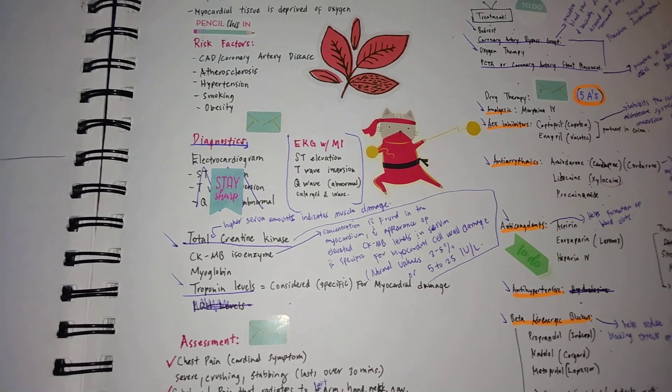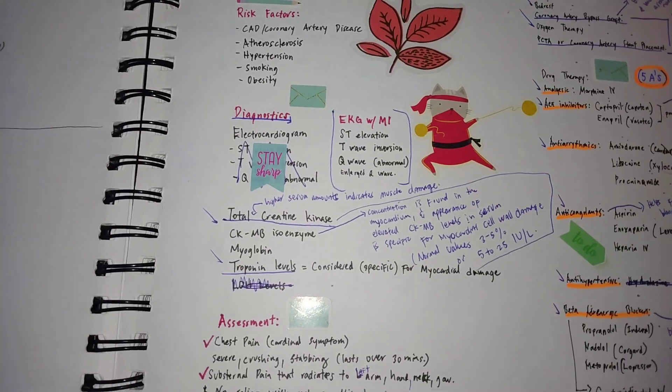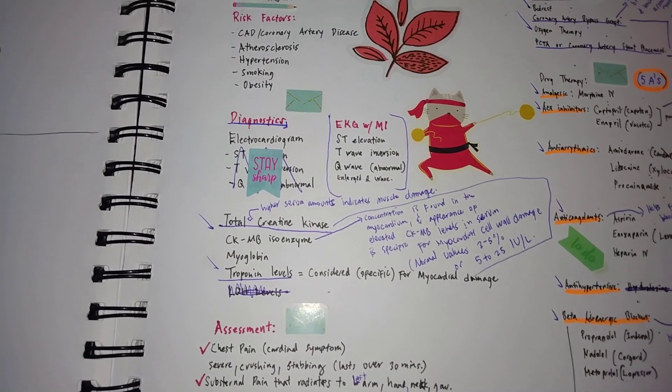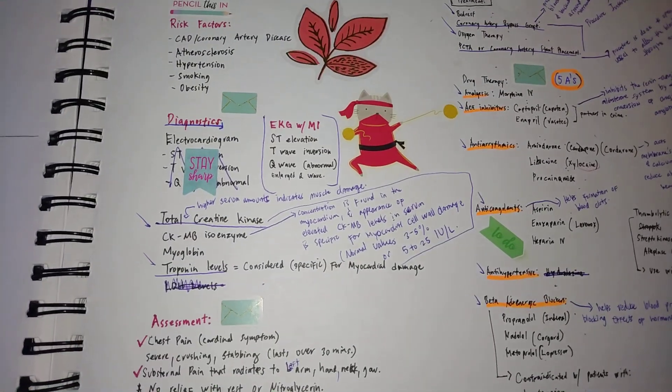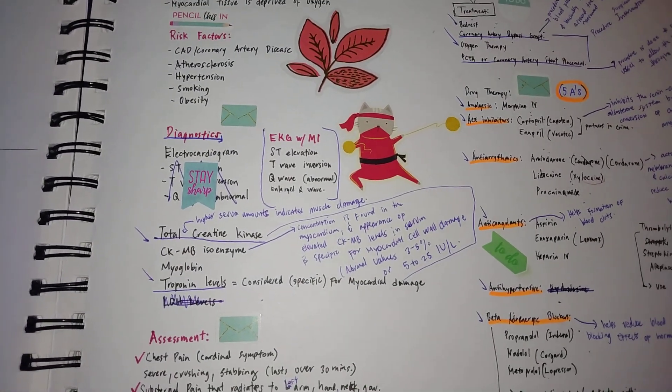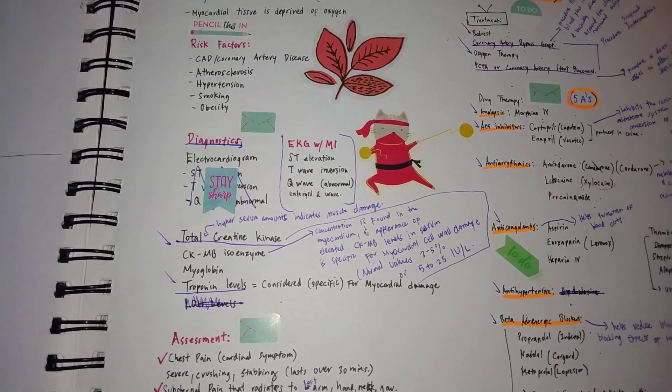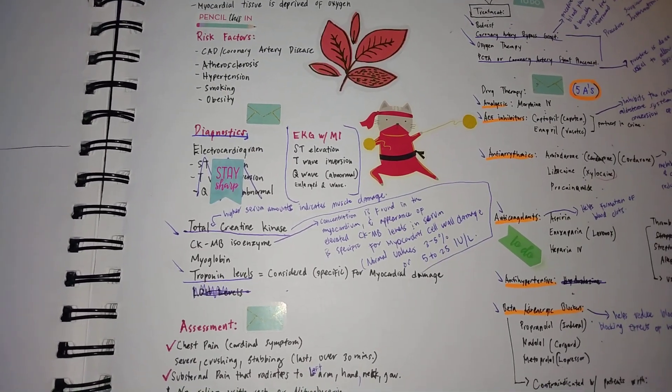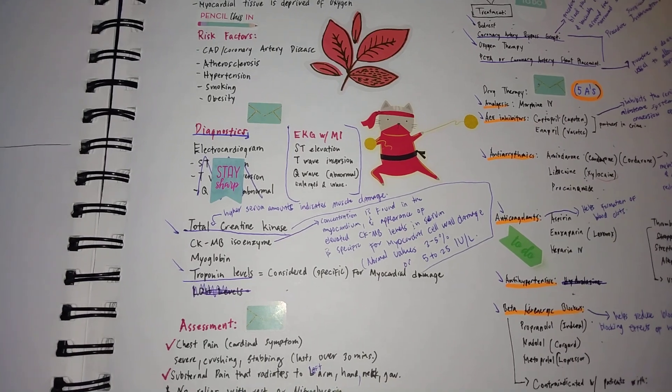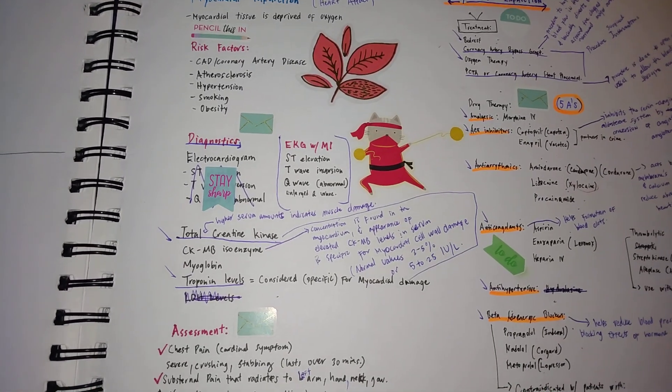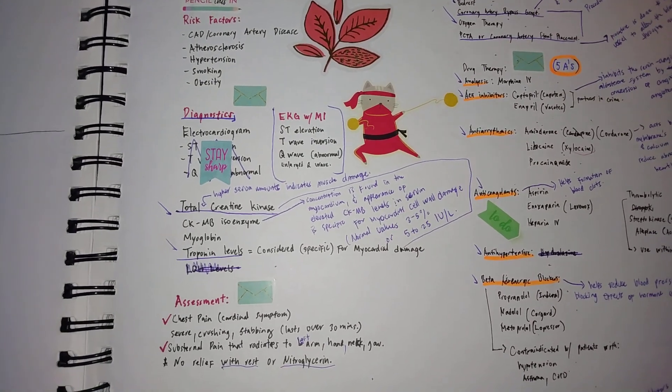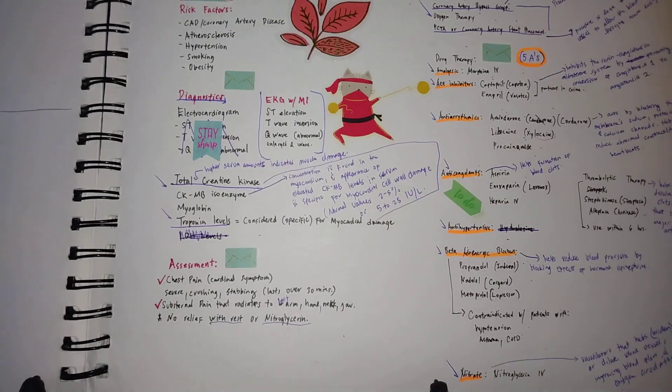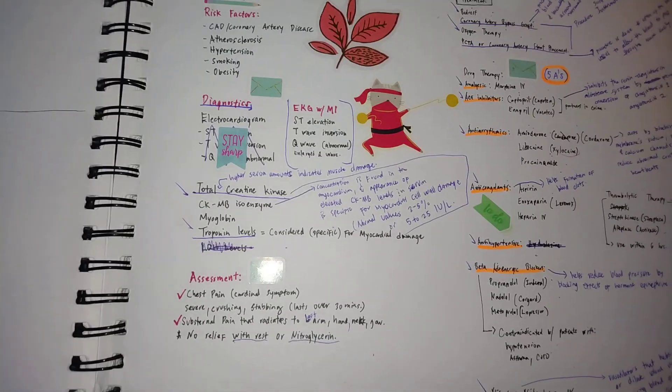Lastly, I spoke about ACE inhibitors. The two main ACE inhibitors are captopril and enalapril, which is Vasotec. Those two are very important, guys. Always remember those two always go together usually. It basically inhibits the renin-angiotensin-aldosterone system by preventing the conversion of your angiotensin 1 to angiotensin 2.